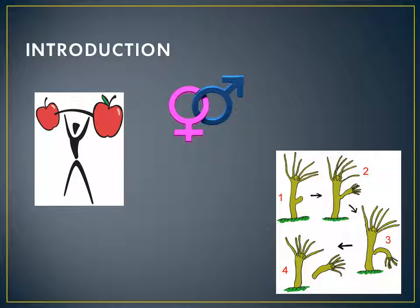In the process of oxidation of food, carbon dioxide, water, and energy are released as waste products. Respiration helps in releasing energy for carrying out vital functions, which is necessary for the maintenance of life.